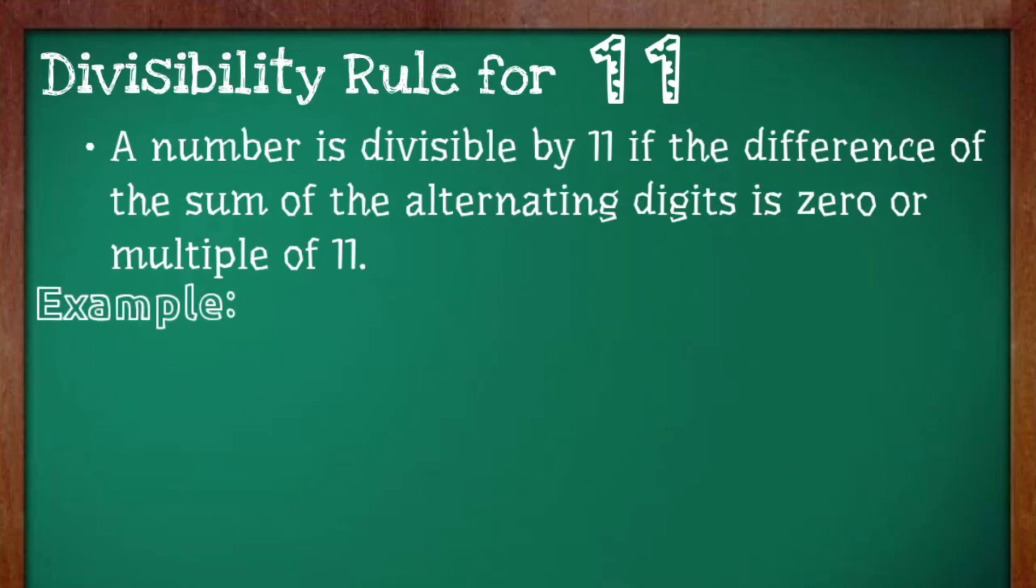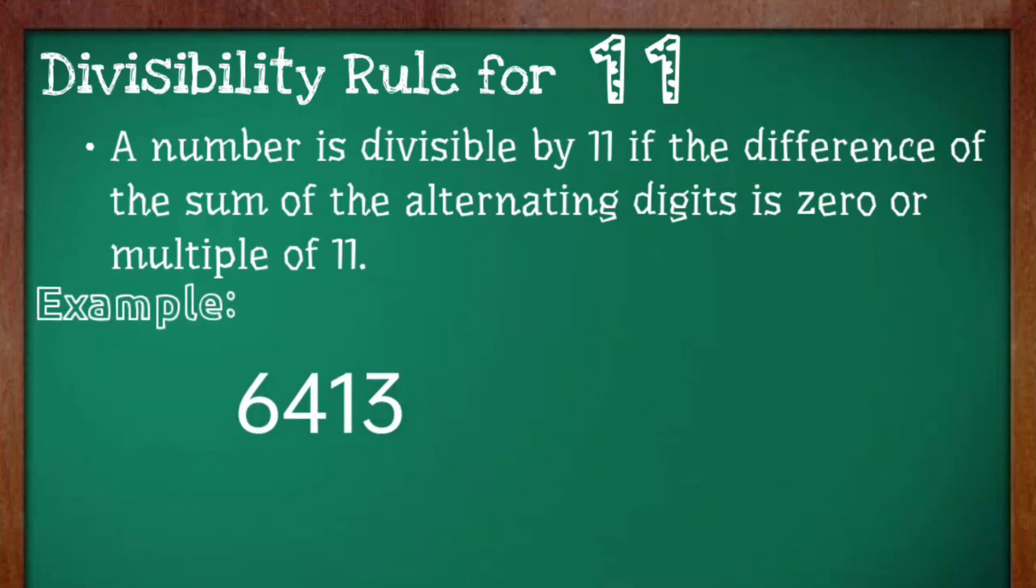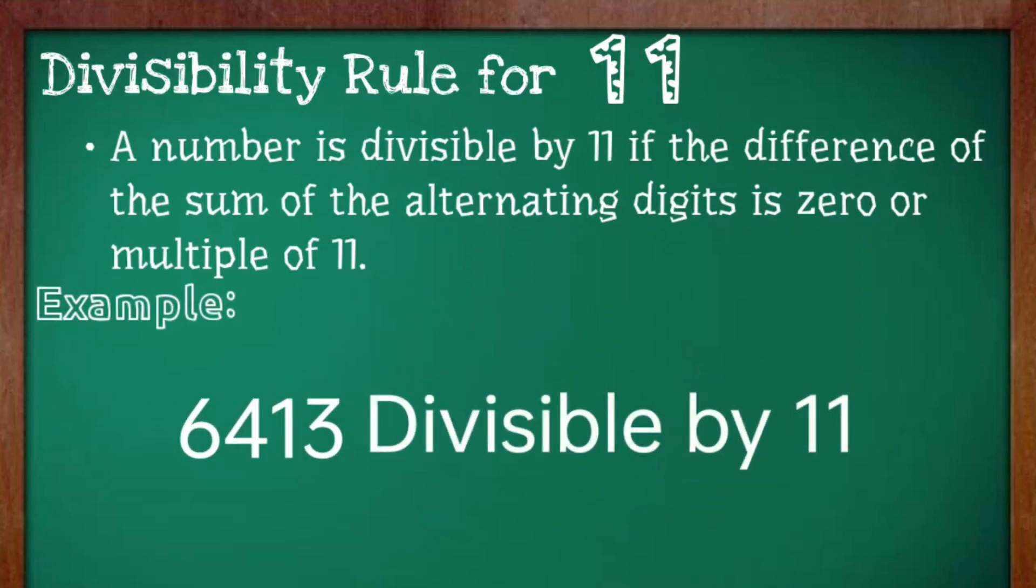Let's try another one. 6413. This time, we have to add 6 and 1 and subtract it by the sum of 4 and 3. 6 plus 1 is equal to 7 minus 4 plus 3 is equal to 7. The result is 0 making 6,413 divisible by 11.